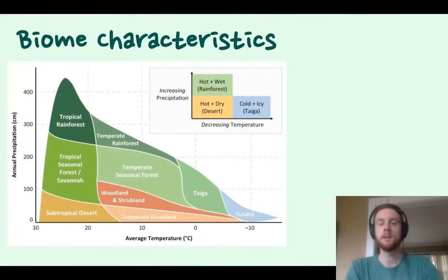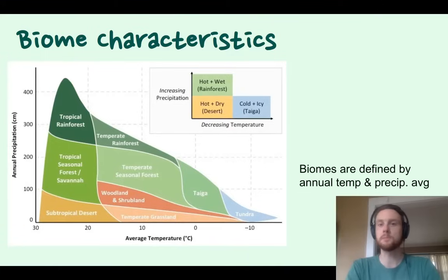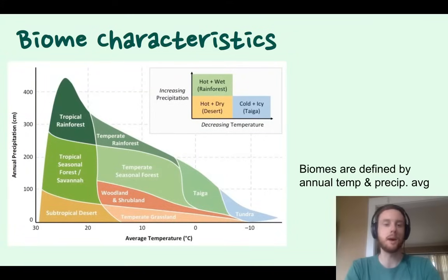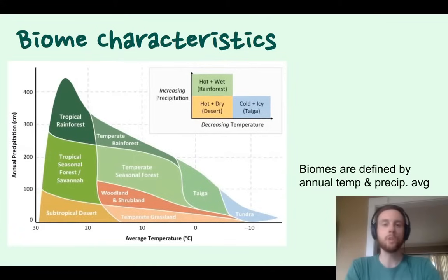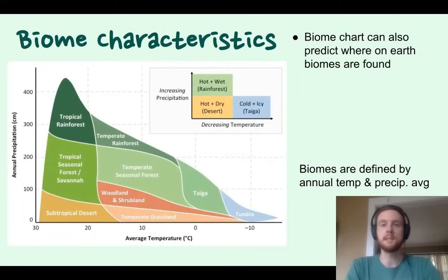The two most important characteristics of a biome are its temperature and precipitation — they are the defining characteristics. Looking at a graph, we can see different ranges of both temperature and precipitation. For instance, the tropical seasonal forests, also known as the savanna, range in annual precipitation from about 60 to 280 centimeters, and in temperature from about 18 up to about 29 degrees Celsius. All of these biomes are defined by the range of precipitation and temperature found in them, and those ranges also predict where on earth we can find the biomes.